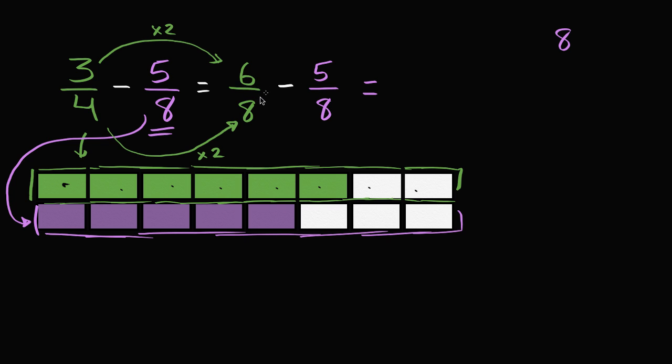But regardless, now we can subtract. We have 6/8 and we want to take away 5 of the 8ths. So we have 6/8 and we want to take away 1, 2, 3, 4, 5 of them. And those 5 of them correspond to these purple 5 right over here.